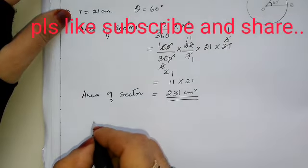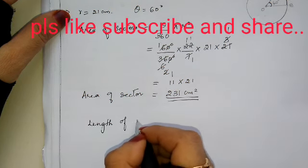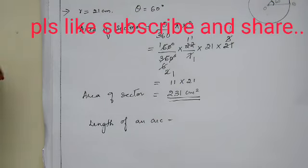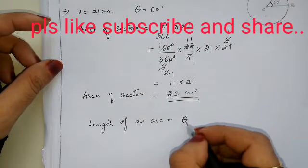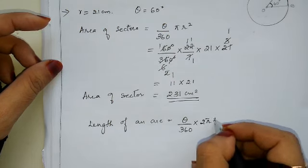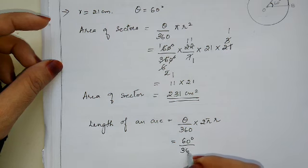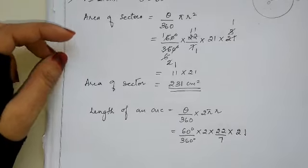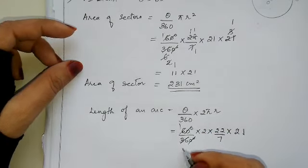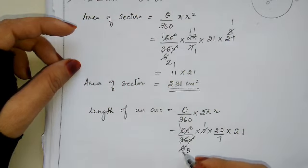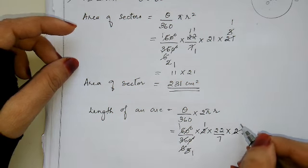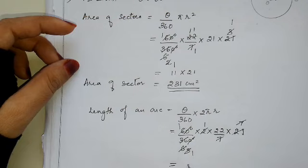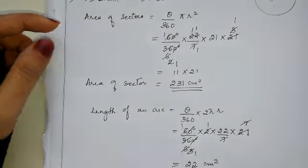Now length of an arc: formula is theta/360 into 2 pi r equals 60/360 into 2 into 22/7 into 21. After cancellation the 7s cancel and we get 22 cm. So the length of the arc is 22 cm.